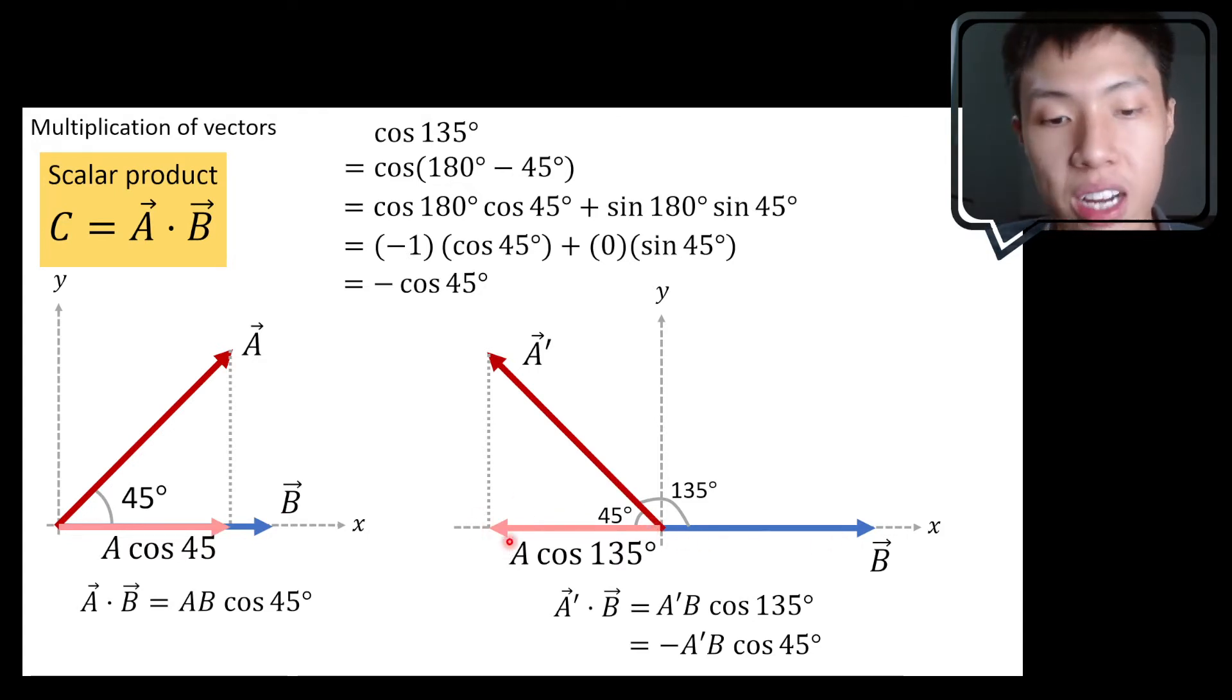So if it's in the opposite direction, the answer of the scalar product will be negative. And this kind of thing, we don't exactly call it parallel. We say that the component of A is anti-parallel to B.